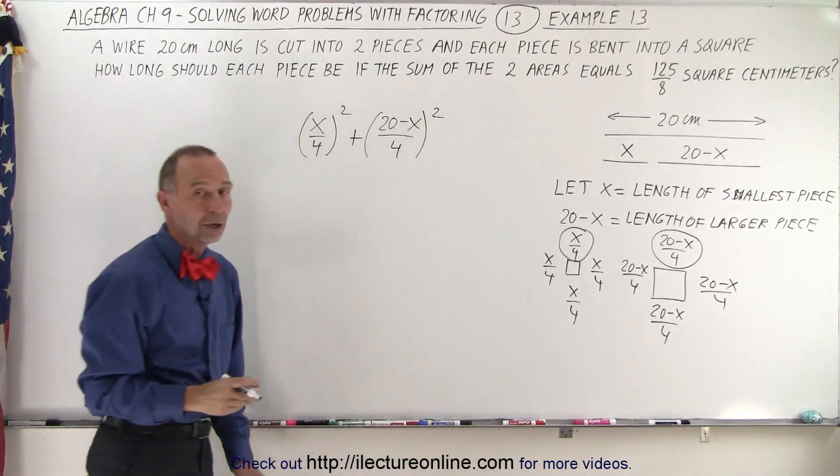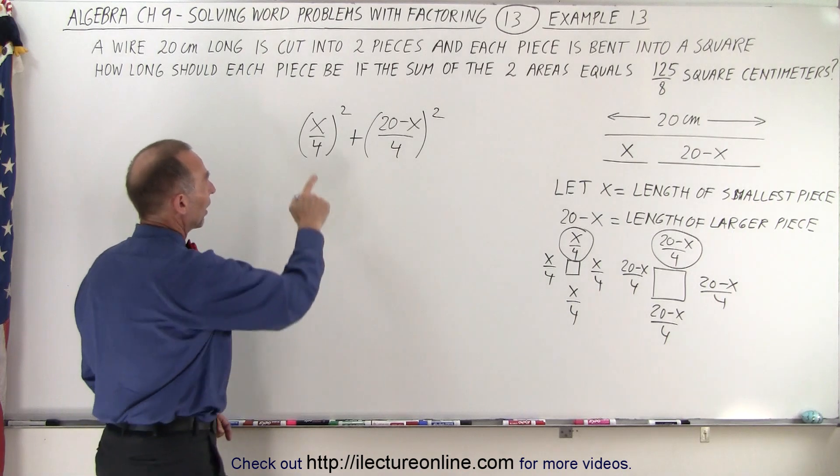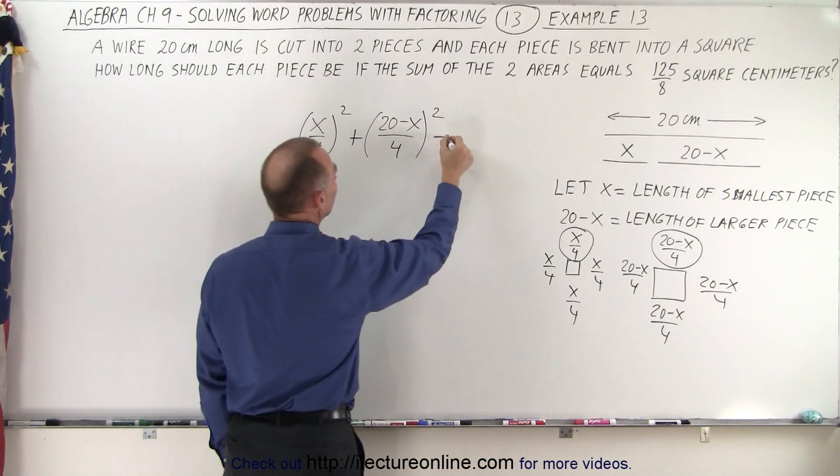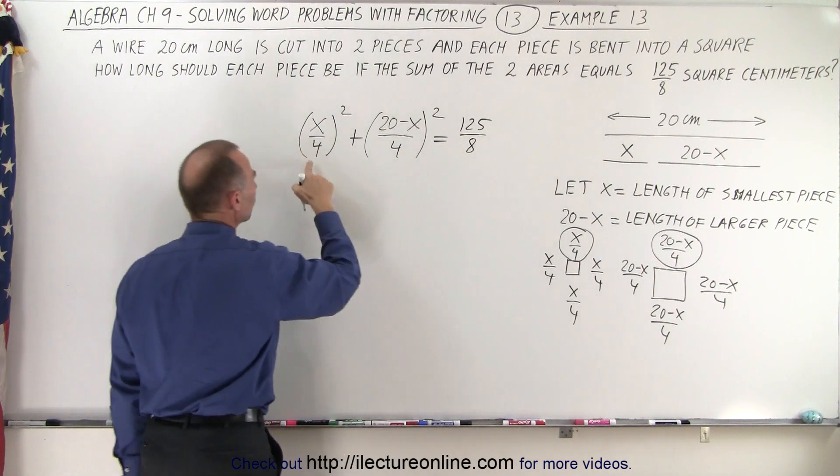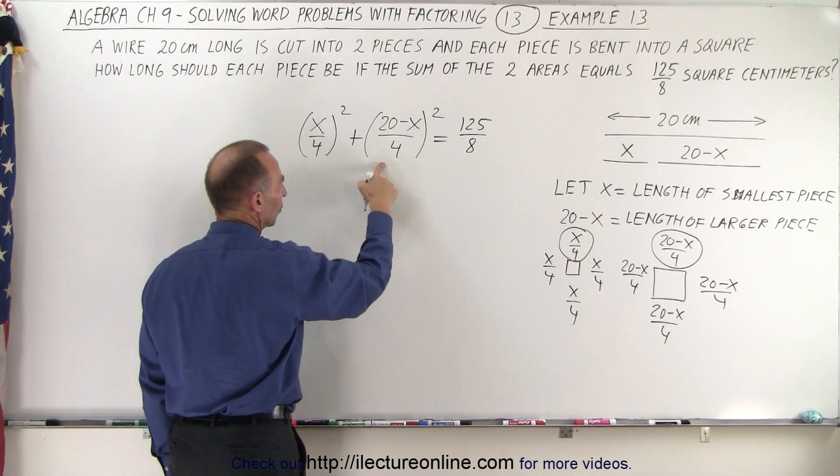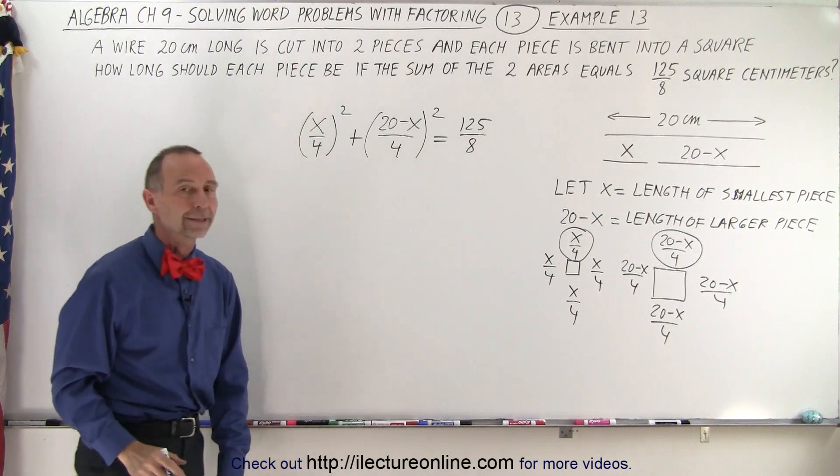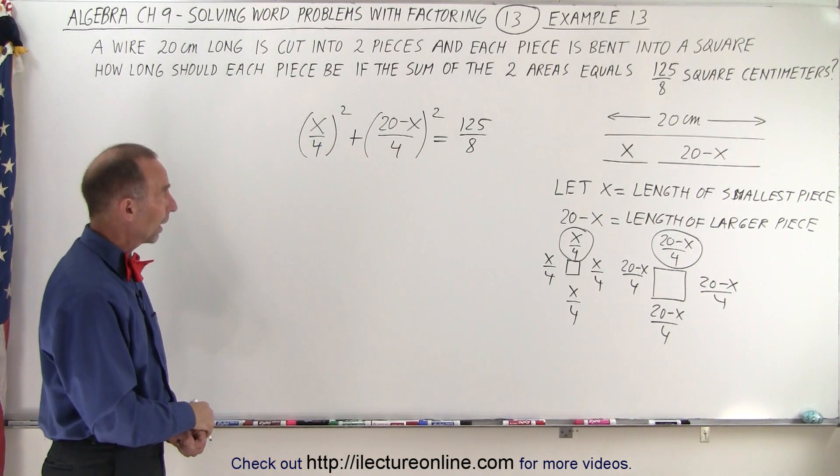That would be the area of the large square. So that's the area of the small square plus the area of the large square equals 125 divided by 8. Now we have to solve this for x.